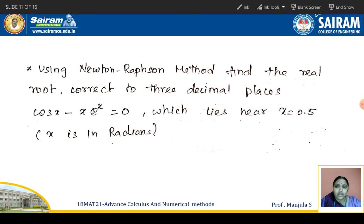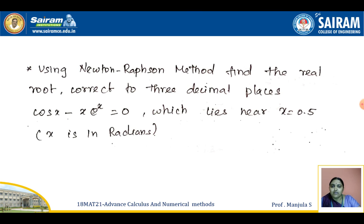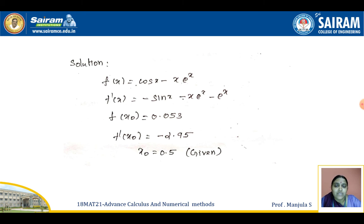Now for the second example: Using the Newton-Raphson method, find the real root corrected to three decimal places of cos(x) - x·eˣ = 0, which lies near x = 0.5. Since they already gave x₀ = 0.5, we do not need to search for the initial approximation. Because the equation contains a trigonometric term, we must set our calculator to radian mode. We define f(x) = cos(x) - x·eˣ, and on differentiation f'(x) = -sin(x) - x·eˣ - eˣ.